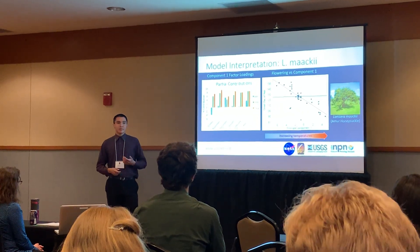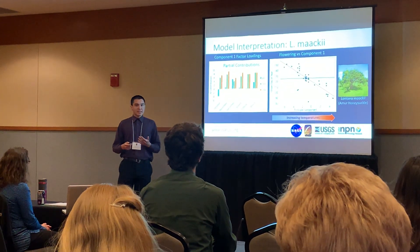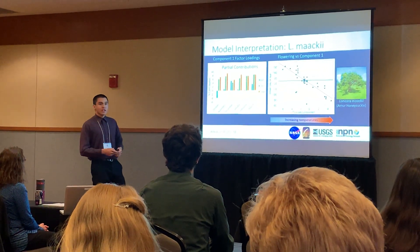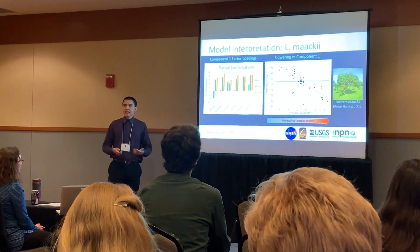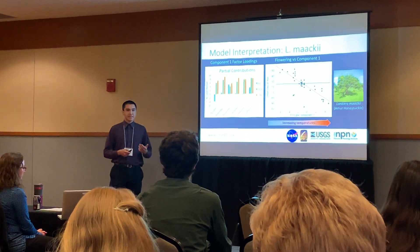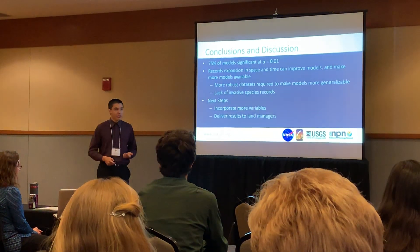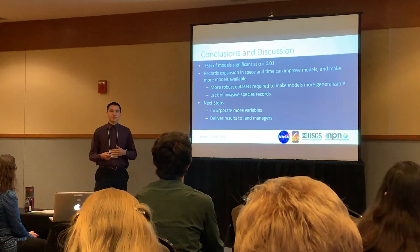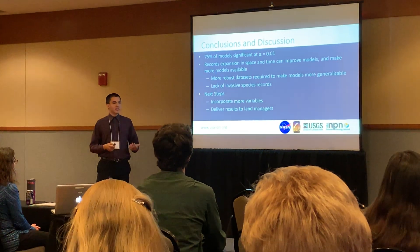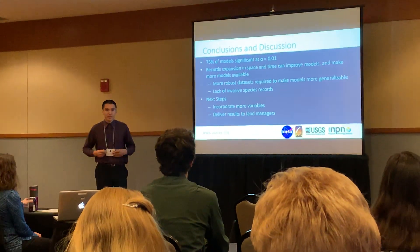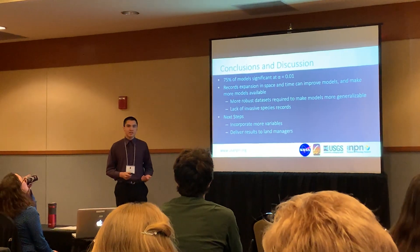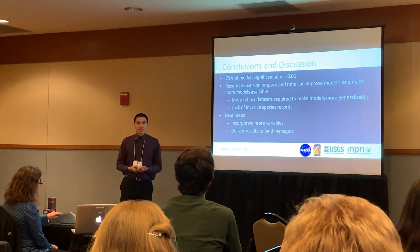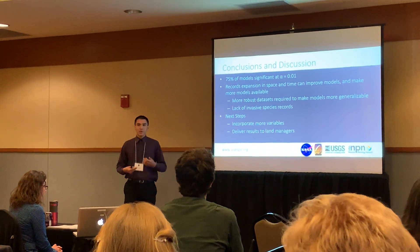Unfortunately, principal component analysis often leads to messy partial contributions — you can get a lot of positive and negative loadings, and loadings that are much higher in some than others. That ultimately makes many of these models quite difficult to interpret. However, 75% of these models were significant, with R-squared values ranging from 0.1 to 0.6. I think this means there's definitely room for improvement in the number of species for which records are collected and the number of records we have for these species.